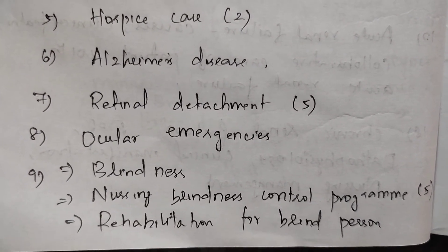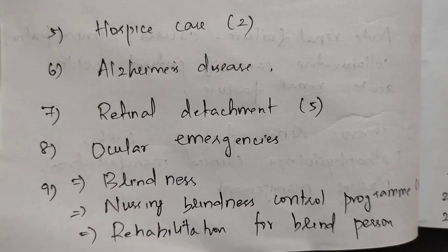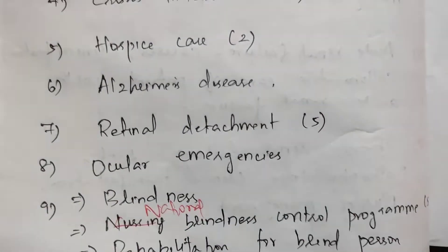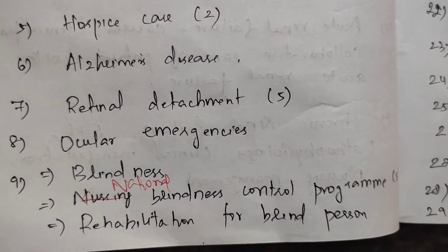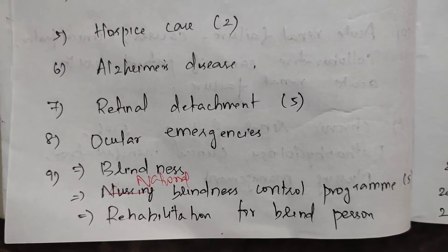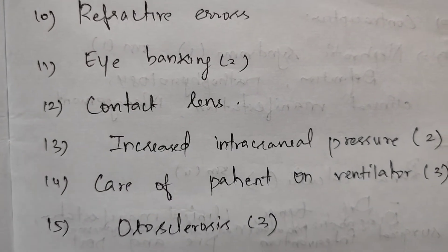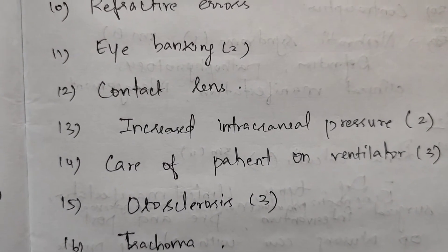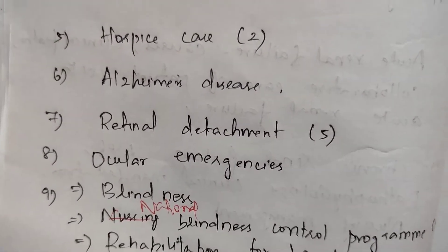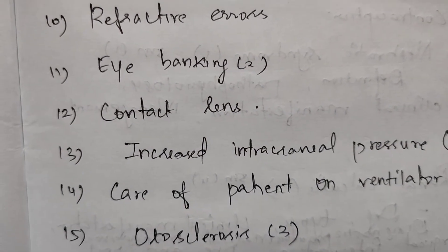Ocular emergency, national blindness control program — five times in question papers, rehabilitation for blind person, refractive errors, eye banking two times, contact lens. All these eye-disorder related topics will be mentioned in the same eye disorders chapter. You will be able to study them easily together.